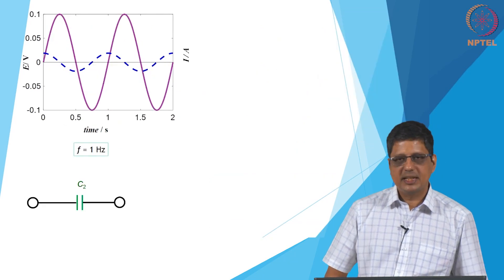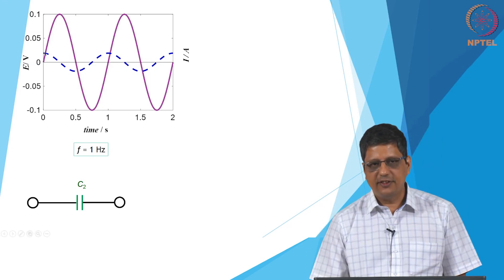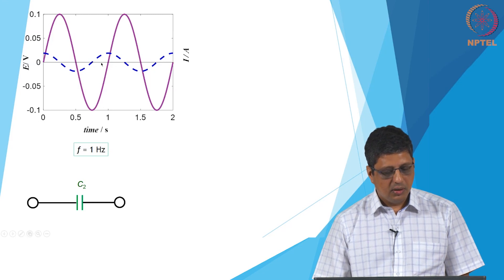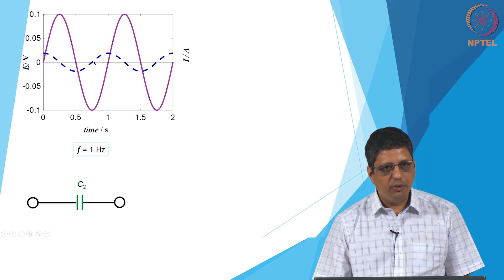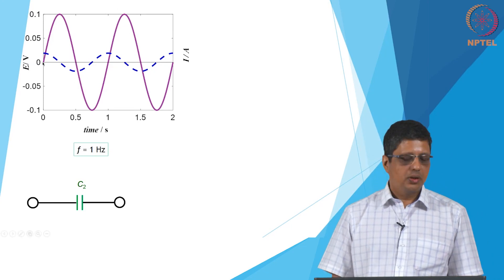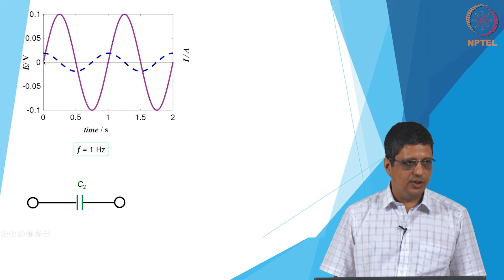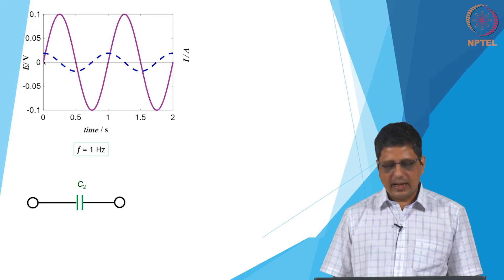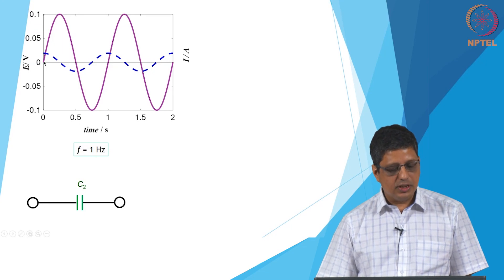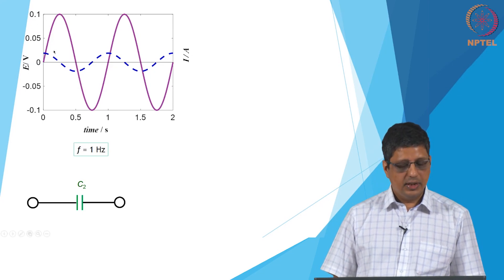For a capacitor, the potential is given in violet and the current in the dashed blue line. The first point to notice is that there is a phase difference — the current actually comes before the potential, meaning current leads the potential. After applying a few cycles and looking at the steady-state behavior, you will see that starting a new cycle with time t=0, the current has a phase offset relative to the potential. The magnitude at 1 Hz is at a certain value, and if we change the frequency we observe a different magnitude.